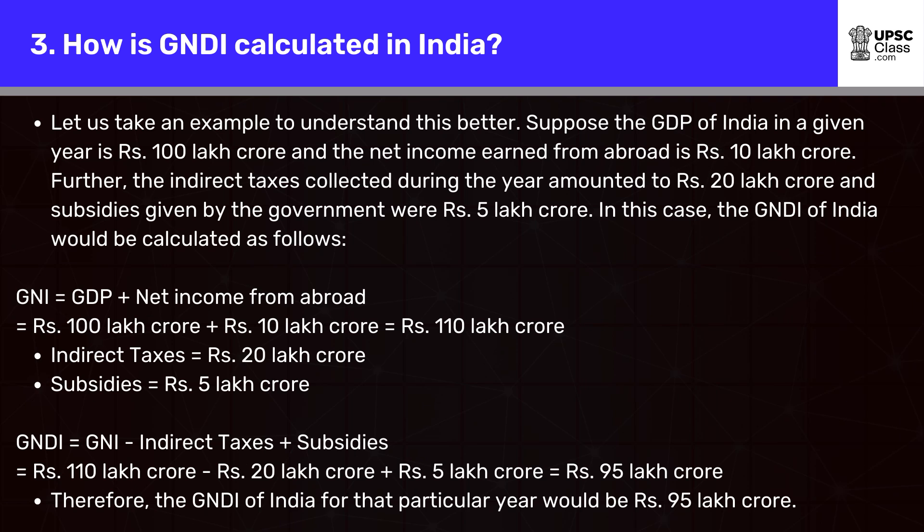Let us take an example to understand this better. Suppose the GDP of India in a given year is Rs. 100 lakh crore and the net income earned from abroad is Rs. 10 lakh crore. Further, the indirect taxes collected during the year amounted to Rs. 20 lakh crore and subsidies given by the government were Rs. 5 lakh crore. GNI = GDP + Net Income from Abroad = Rs. 100 lakh crore + Rs. 10 lakh crore = Rs. 110 lakh crore.